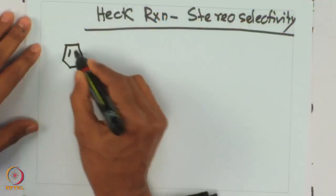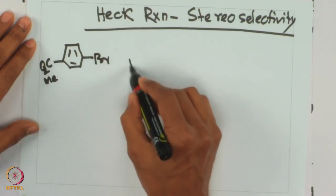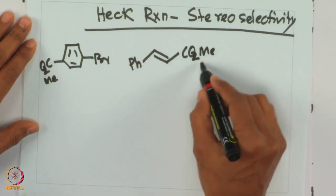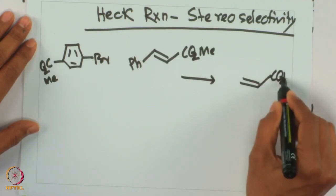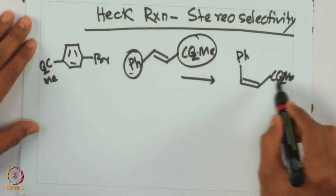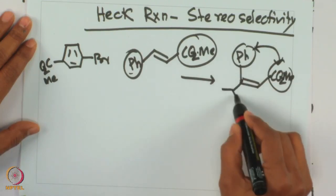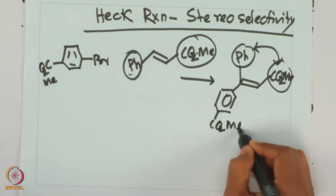We will first discuss aryl halide reacting with olefin. We are taking an aryl bromide along with CO2Me, an electron-withdrawing or electron-deficient group. The product from this reaction: CO2Me on this side, the phenyl substituent will be on the same side. Phenyl and CO2Me were opposite to each other; now they should be on the same side, and then the aryl group should come into picture.